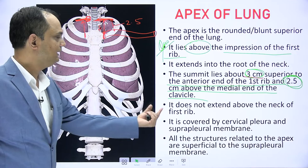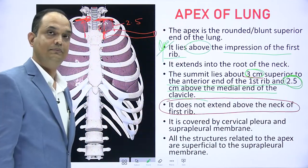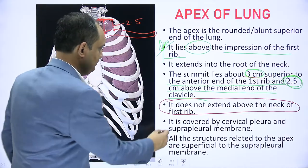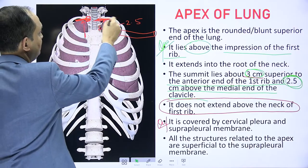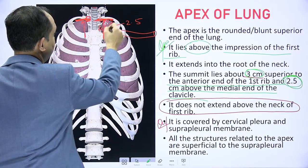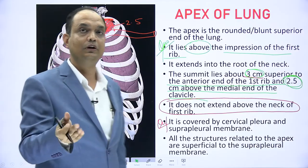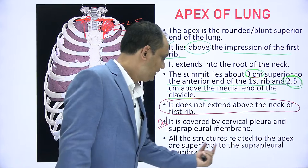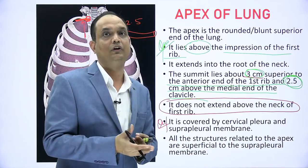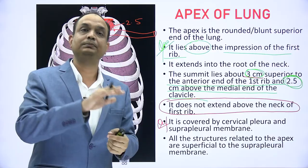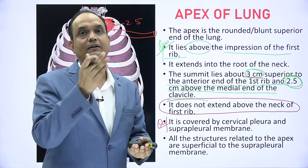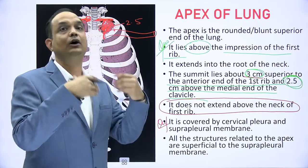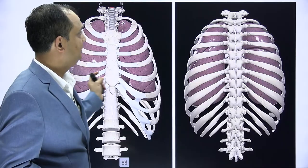The apex does not extend above the neck of the first rib; the height is measured from the anterior end, not the posterior end. It is covered by the cervical pleura and the supra pleural membrane. All structures related to the apex are superficial to the supra pleural membrane, meaning they lie outside it. For example, the subclavian artery lies between the lung and these two layers.